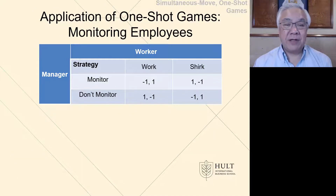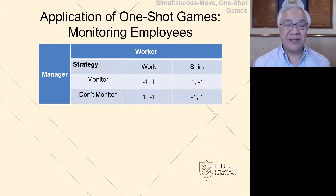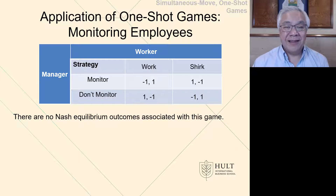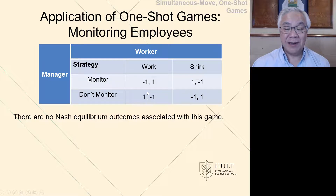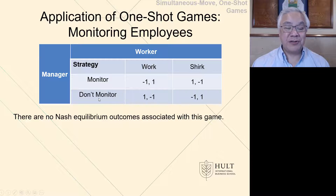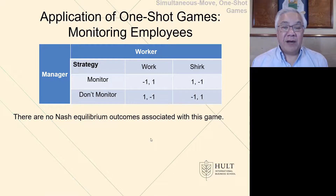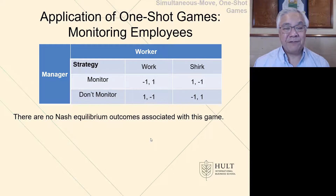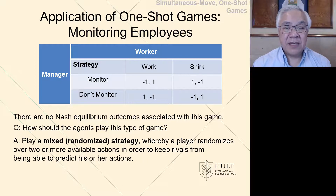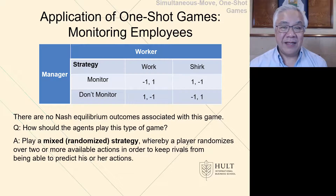Let's try a different scenario about monitoring employees, where the manager could choose to monitor or not to monitor, and the worker could choose to work hard or shirk. Here, there is no Nash equilibrium — no position where either party can say they can't better themselves by making a different choice. If the worker is going to work, the manager says I won't monitor and I'll save the cost. But then the worker says if the manager isn't monitoring, I'll shirk. So for any of these quadrants, there is an advantage to one party if that knowledge were had. You would play this with a mixed or randomized strategy so that you're not predictable, because if you were predictable, you could be taken advantage of.